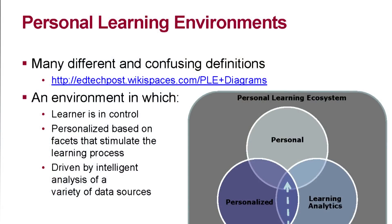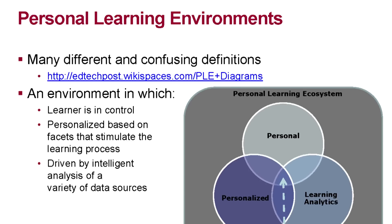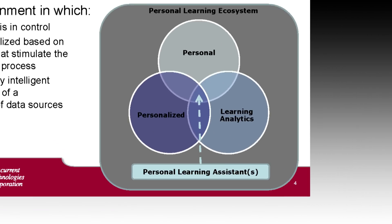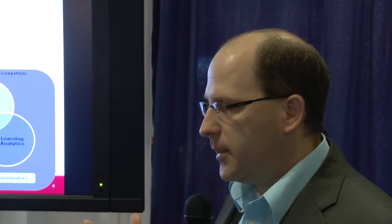During our research, we distilled it down to three aspects: one being that the learner is in complete control; two, that it's personalized based on facets that stimulate the learning process; and three, it's driven by intelligent use of data or data analytics. The Venn diagram here shows that, and what we're looking at in our research are these three pillars in what we call a personal learning ecosystem. At the intersection of those Venn diagrams, we believe technologies like personal learning assistants or agents could be the intersection point to help drive these learning environments to be very personal.